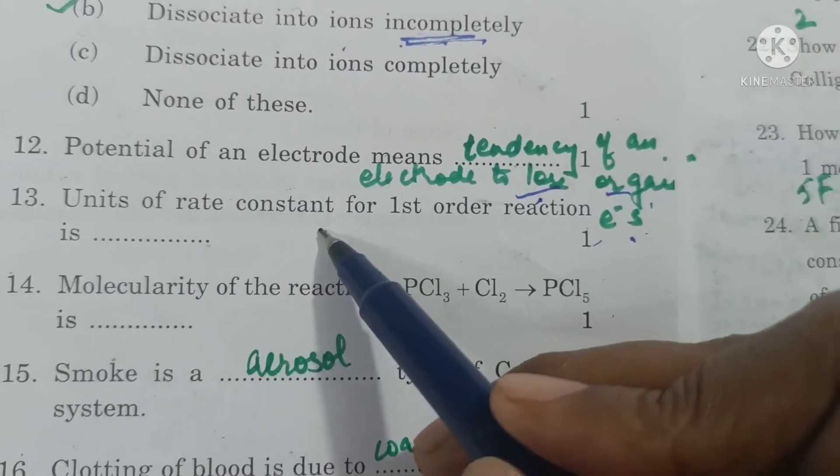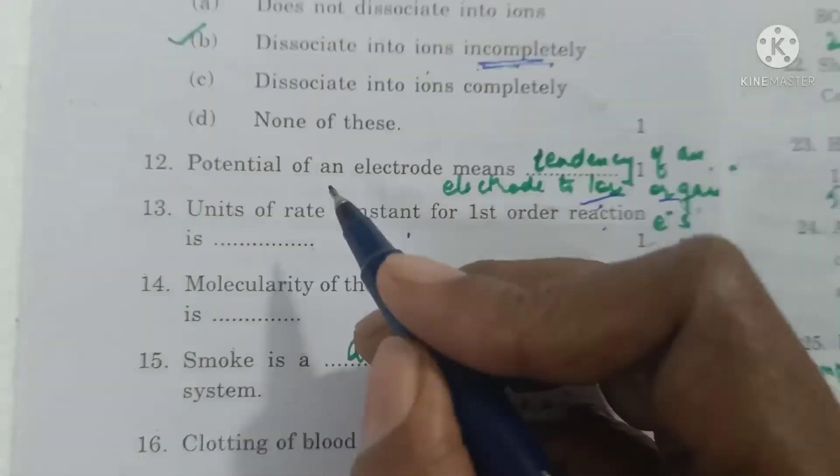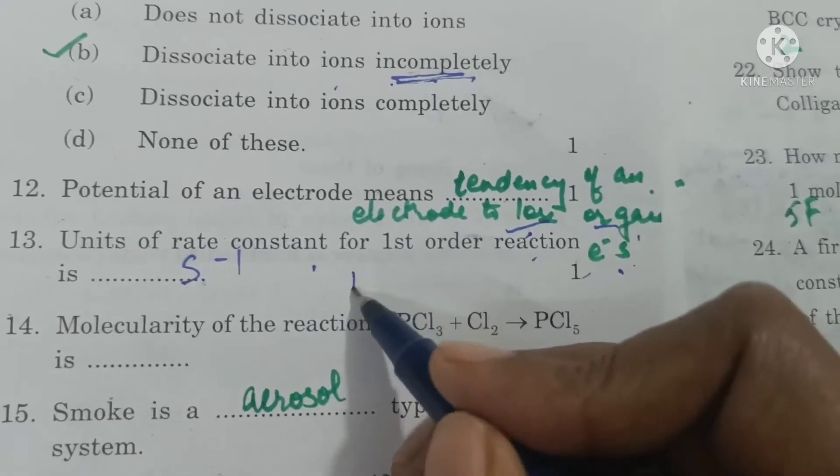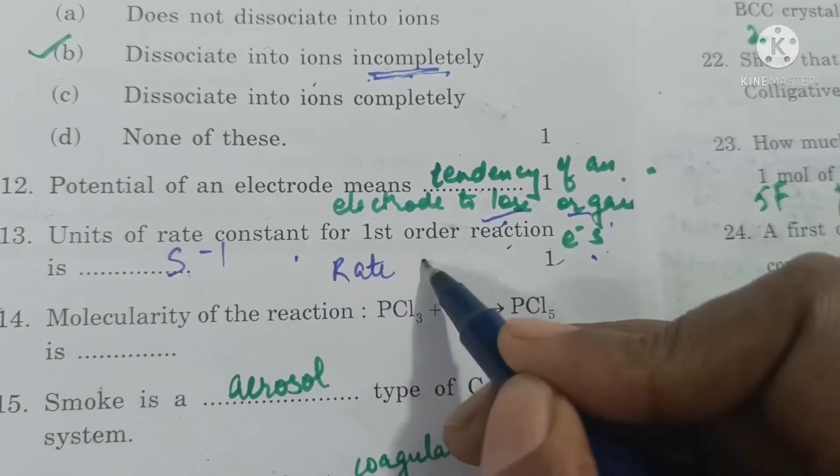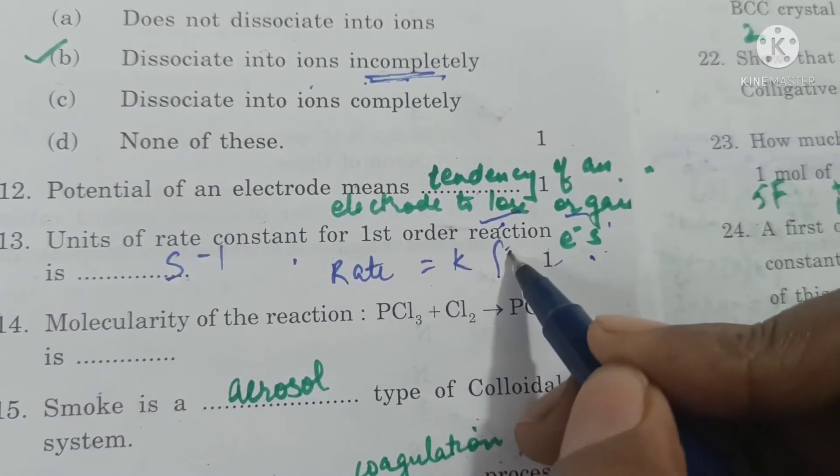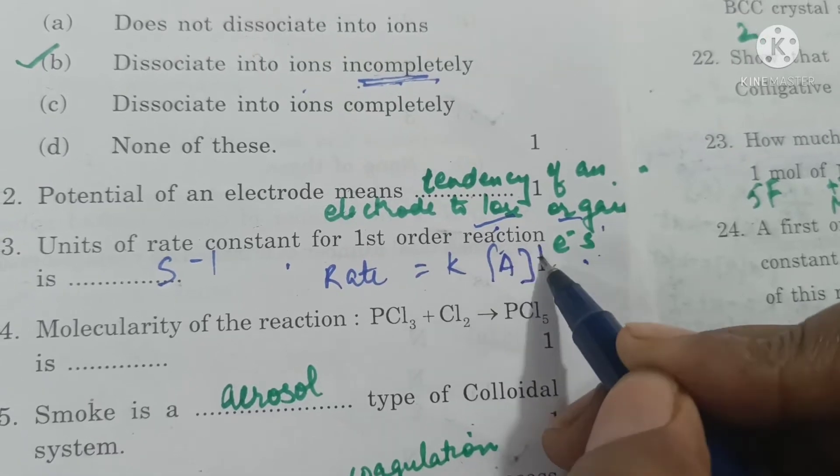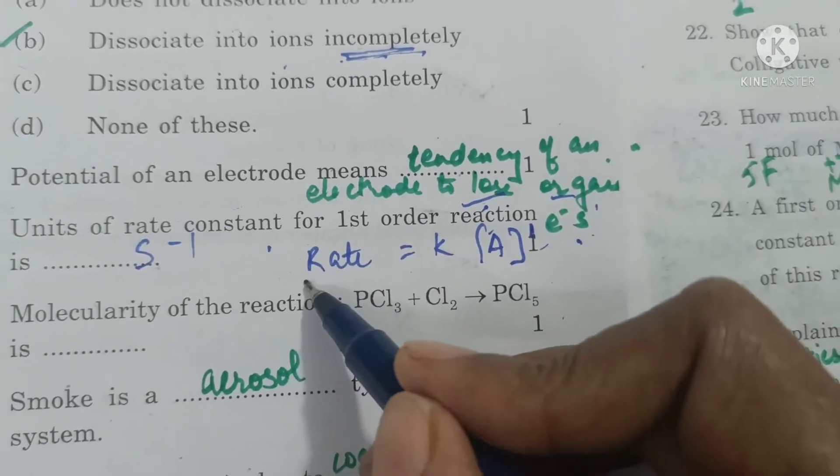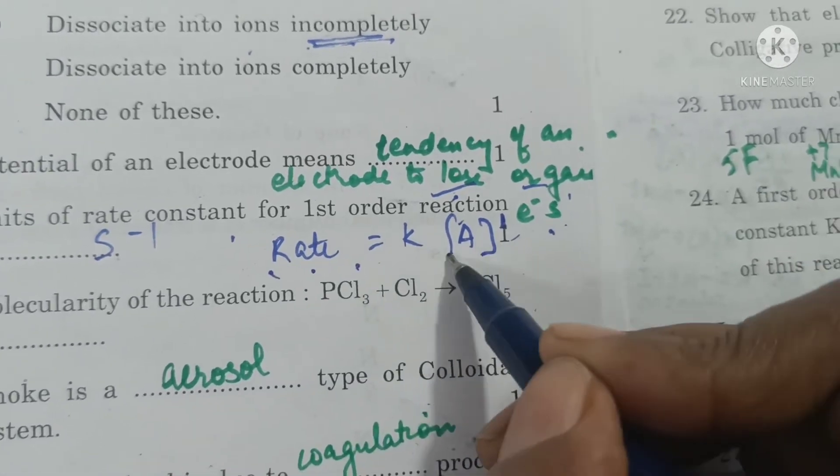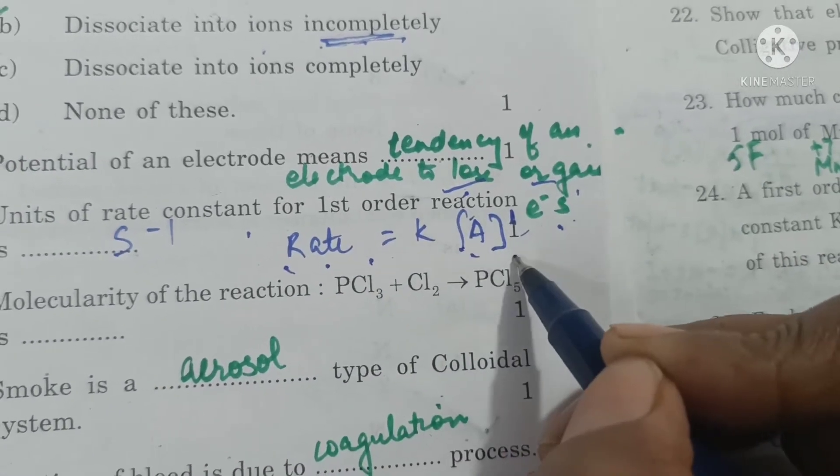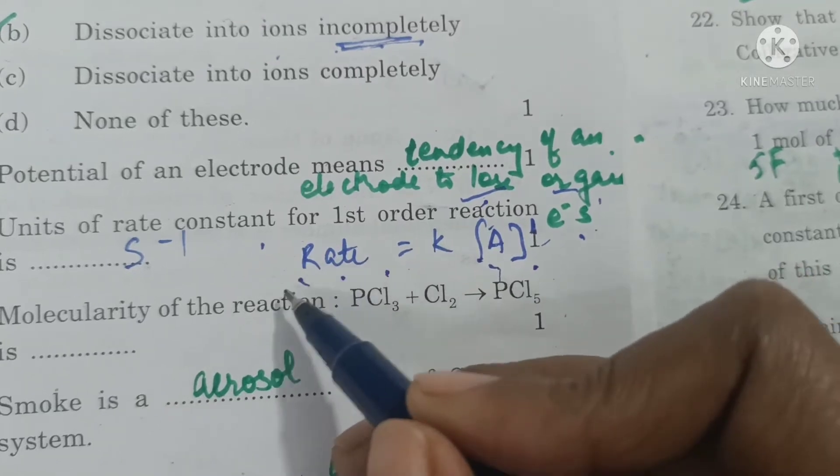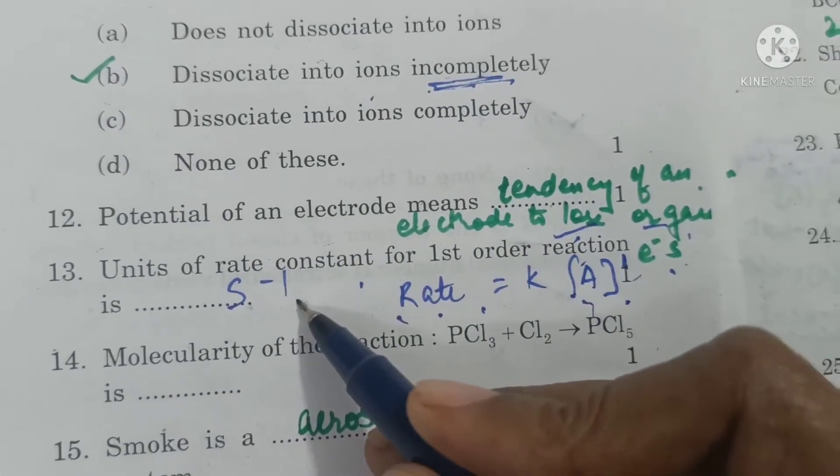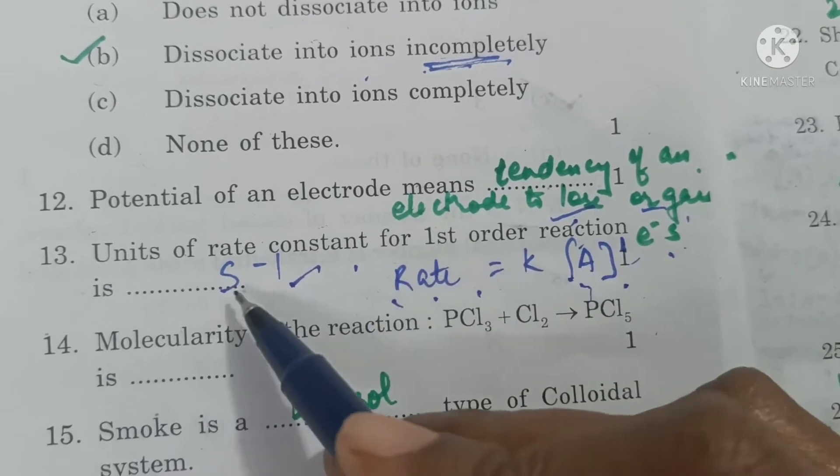Units of rate constant for first order reaction is second inverse. Rate equals K into concentration raised to power 1 for first order. Units of rate are moles per liter per second. Units of concentration are moles per liter. When moles per liter cancel out, second inverse is left.